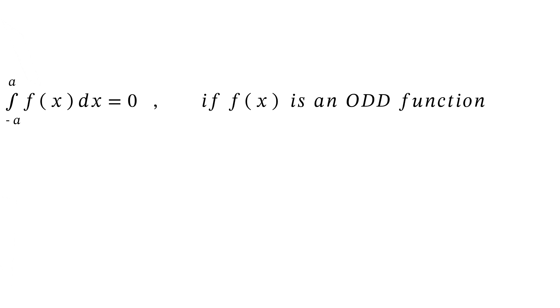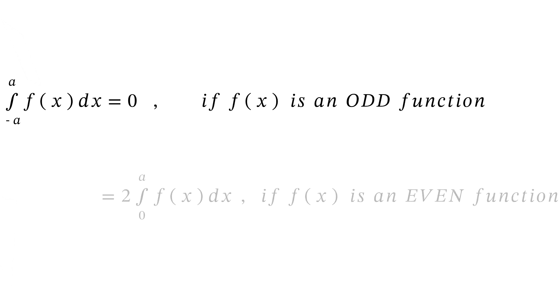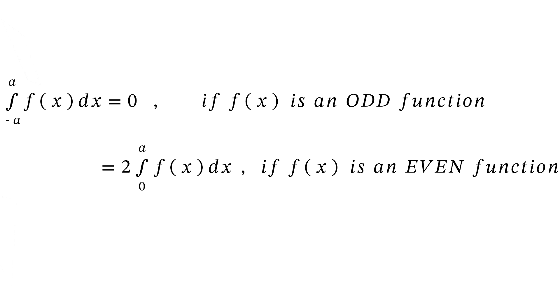Now a theorem from integrals: the integral from minus a to a of f(x) dx — notice the limits are opposite to each other. If f(x) is an odd function, the answer is straightaway 0. If f(x) is an even function, the answer is 2 times the integral from 0 to a of f(x) dx.